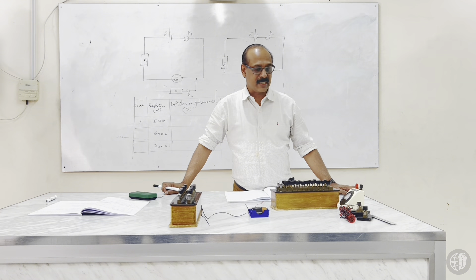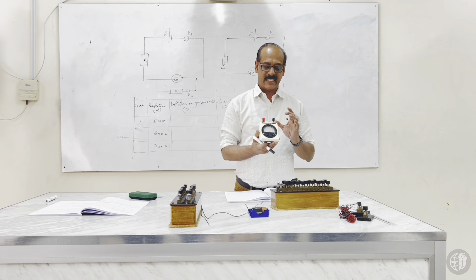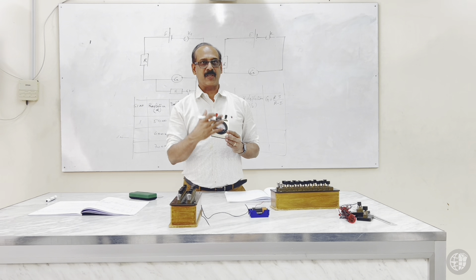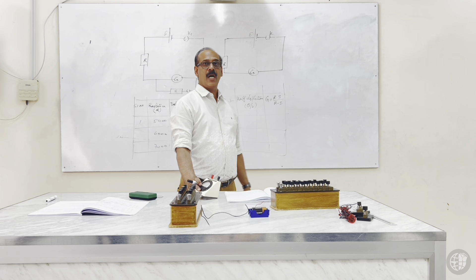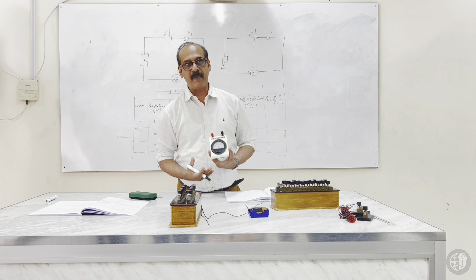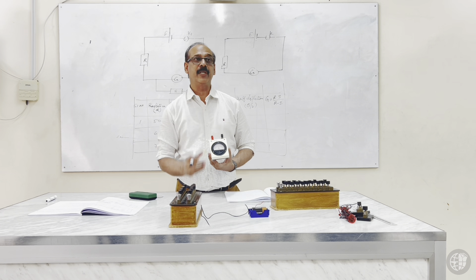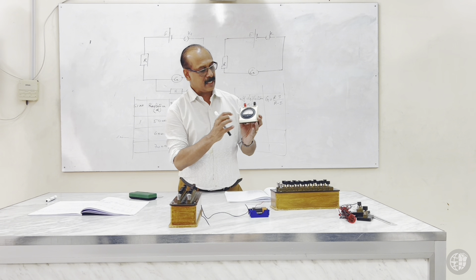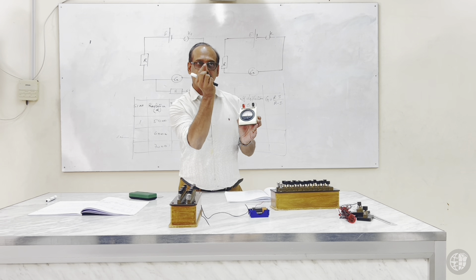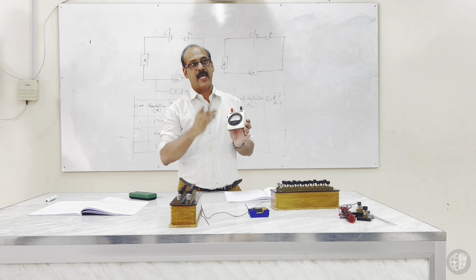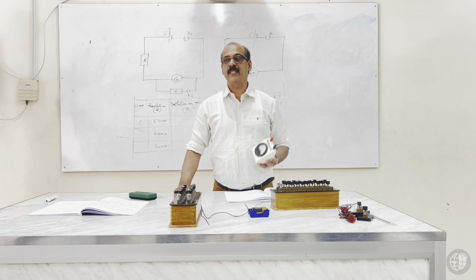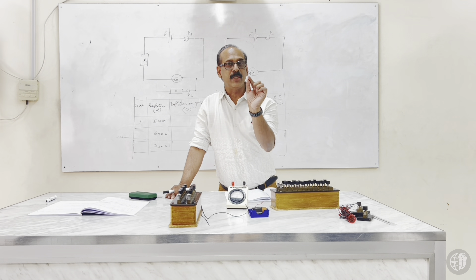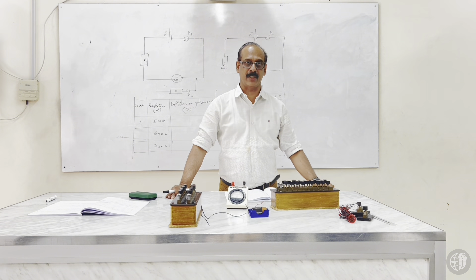Today we discuss: first, determining the resistance of a given galvanometer; second, calculating the figure of merit of the galvanometer. The formula for galvanometer resistance is G equals R times S divided by (R minus S). Figure of merit means the amount of current required for unit deflection — how much current is needed to produce one degree deflection in the galvanometer, used to calibrate it.